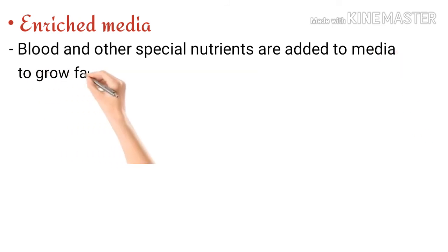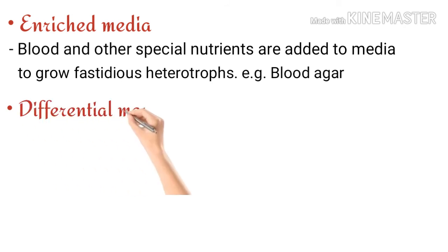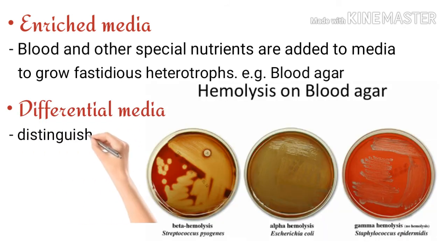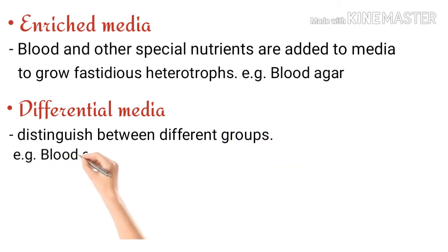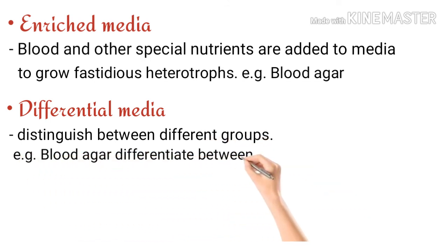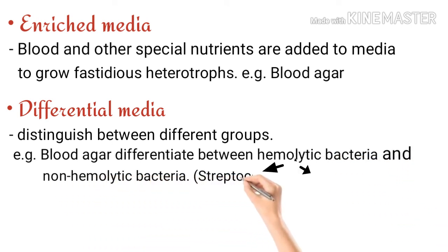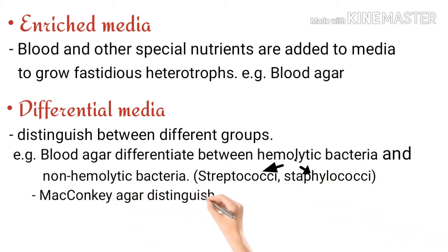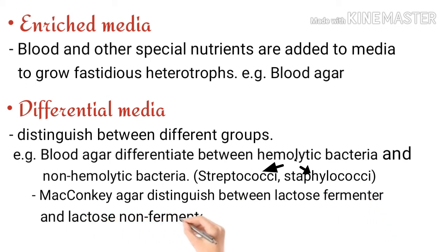Enrichment media is that in which blood and other special nutrients are added to the media to grow fastidious heterotrophs; blood agar is its example. Differential media is used to distinguish between different groups — for example, blood agar is used to differentiate between hemolytic and non-hemolytic bacteria, such as streptococci and staphylococci. MacConkey agar differentiates between lactose fermenters and lactose non-fermenters.